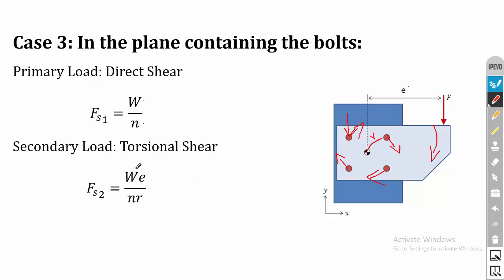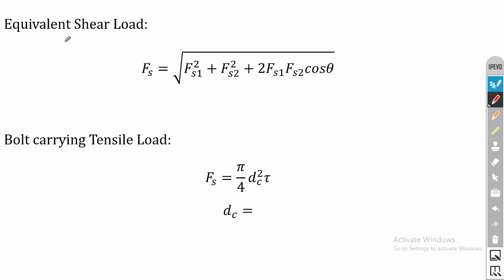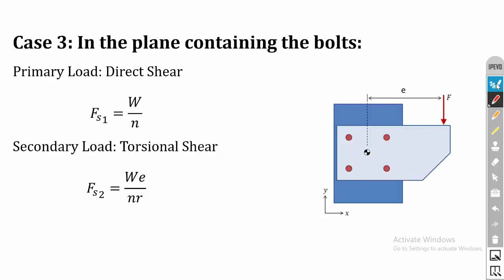Because of the rotation, a torsional shear is produced on the bolts. Taking moment about the central point: W × e = fs2 × r × n, where r is the distance between the center of gravity point and the bolt axis, and n is the total number of bolts. Both primary and secondary loads are shear loads. To calculate the equivalent load for two shear stresses: fs = √(fs1² + fs2² + 2·fs1·fs2·cos θ).